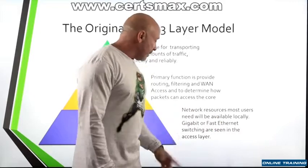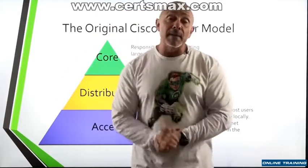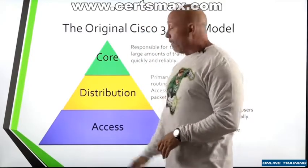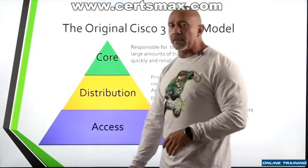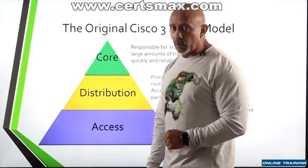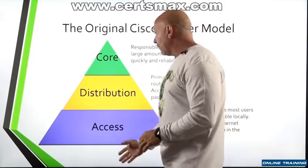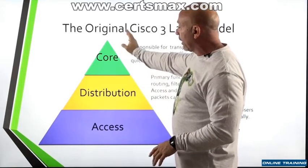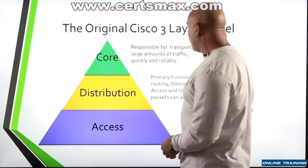You're seeing Gigabit or Fast Ethernet switching at the access layer as well. Gigabit is hopefully everywhere — a lot faster up in the higher layers — but definitely at the access layer you want Gigabit or Fast Ethernet. You may have fiber coming in. Once you get into the distribution and core layers, you want to see a much faster delivery method.